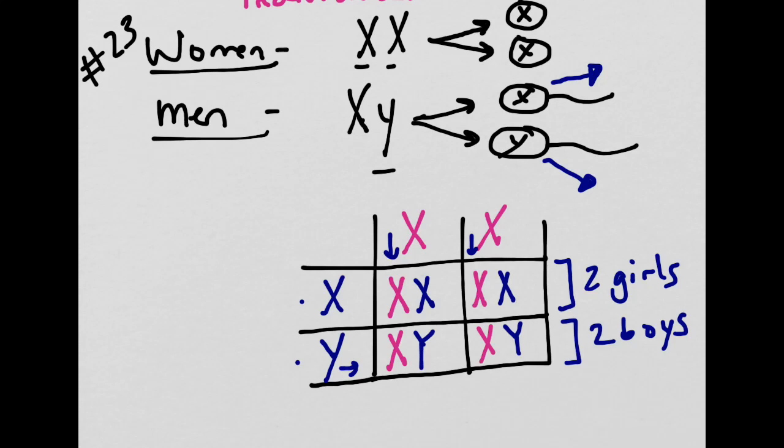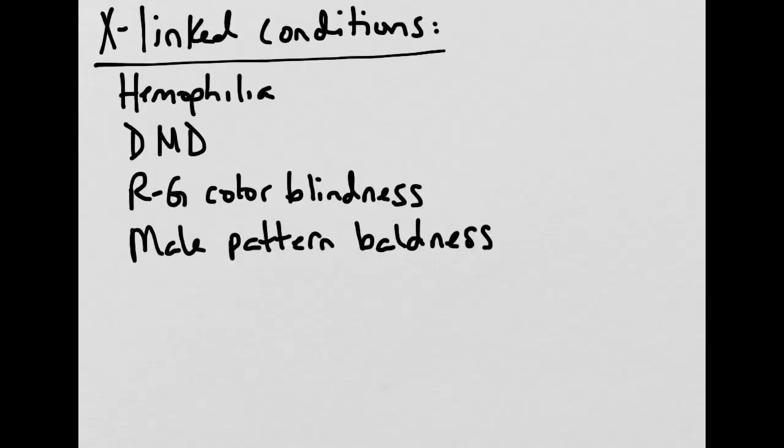Now look at them. So women having two copies of the X chromosome versus men having only one copy of the X chromosome. This is where the X-linked genes come in. Okay, just so you understand some examples of X-linked conditions, and we'll use one of these as an example here.